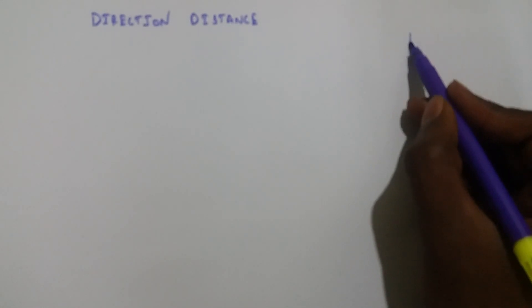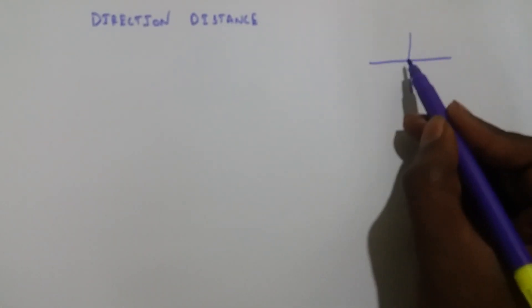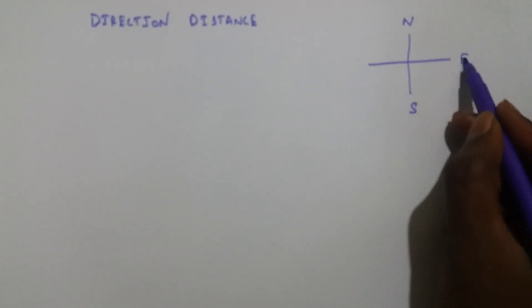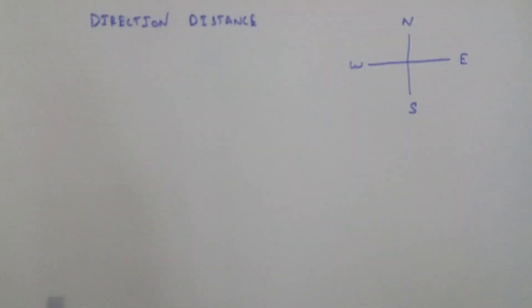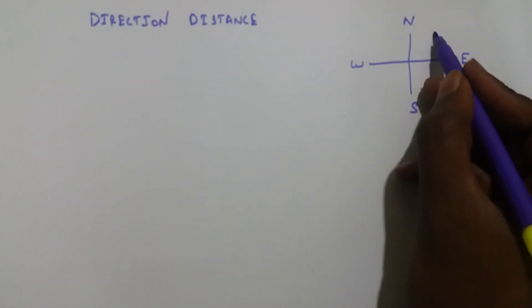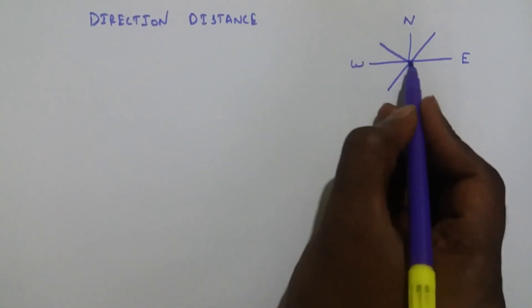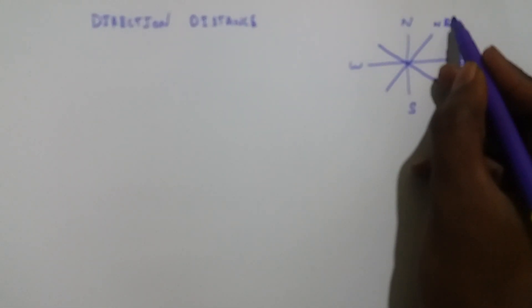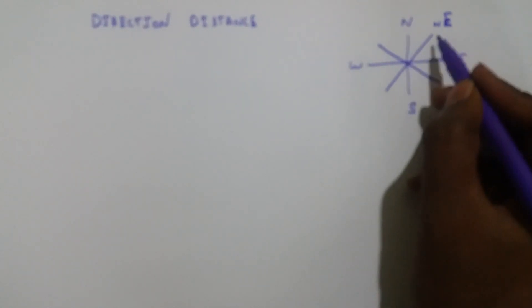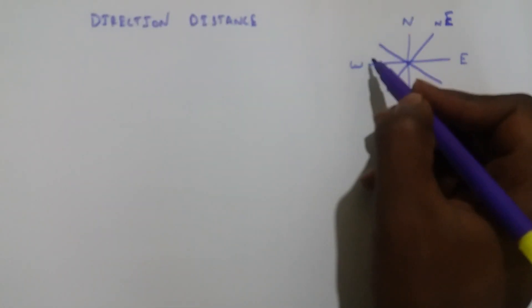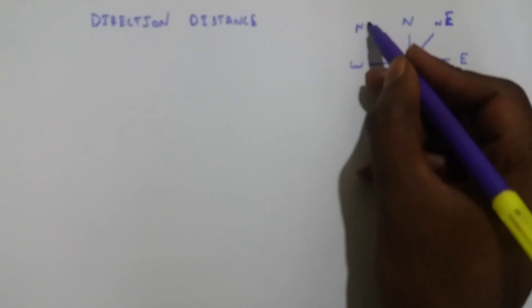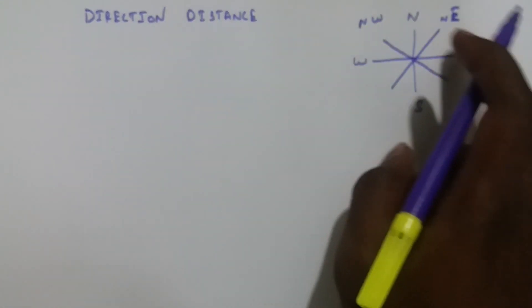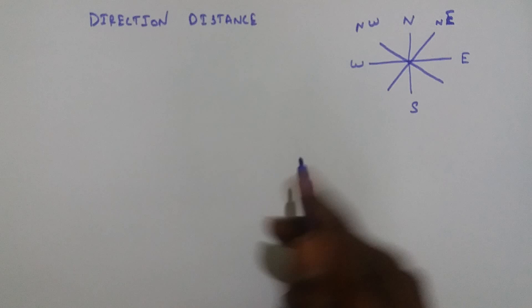Now we are going to see the directions — North, South, East, and West. We will also see the intercardinal directions: North-East, North-West, and North-East. These are the basic rules.